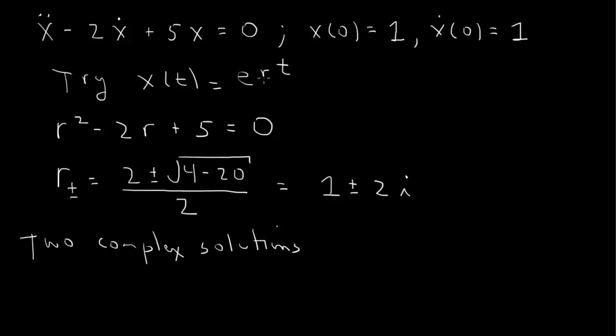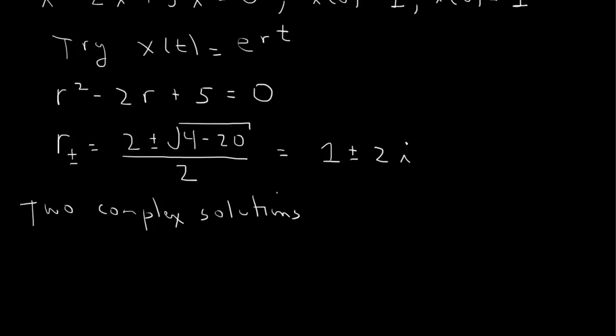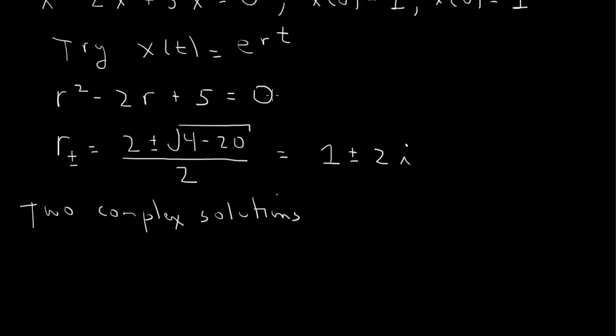And then we can take a linear superposition of those 2 complex solutions to obtain 2 real solutions. The real solutions then are going to be e to the real part of r times t. And then the imaginary part here goes into the argument of cosine and the argument of sine. So our general solution here is going to be e to the real part here, 1 times t.